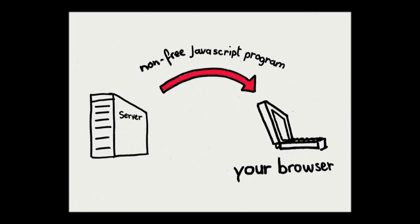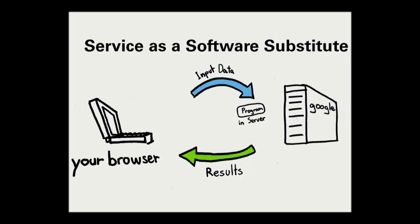Many websites send non-free programs written in JavaScript to the user's browser. If you don't want to run non-free programs, you should install LibreJS, which blocks non-free JavaScript. And sometimes servers will offer to do your computing — they say, send us all your data. The server does the computing and sends you back the results. But you're not supposed to think about what's happening, because it's a cloud and you don't see what's going on. It's service as a software substitute, and it takes away control of your computing.